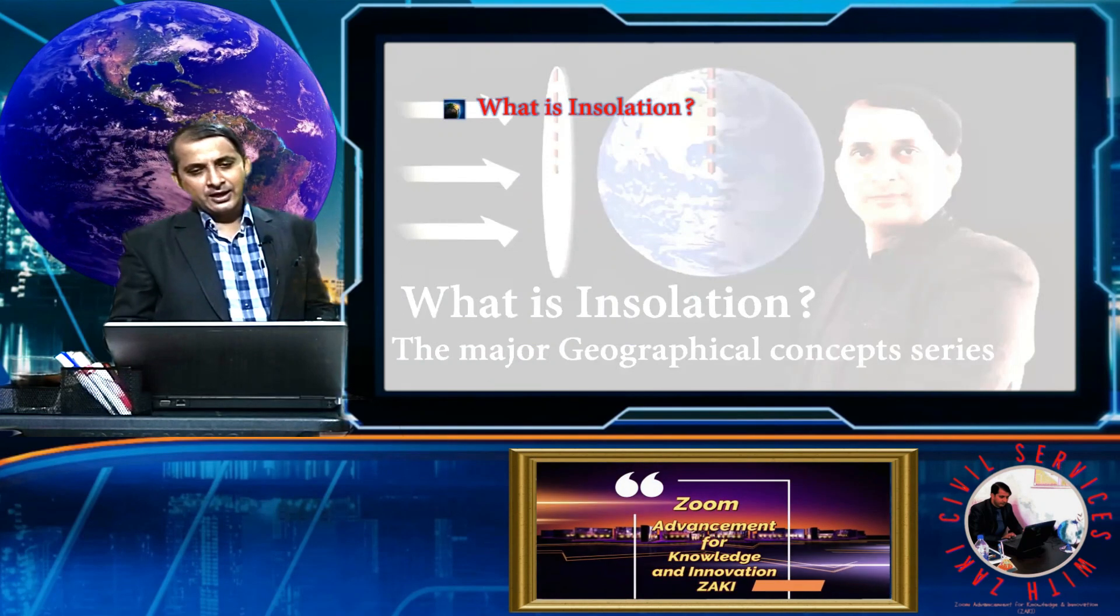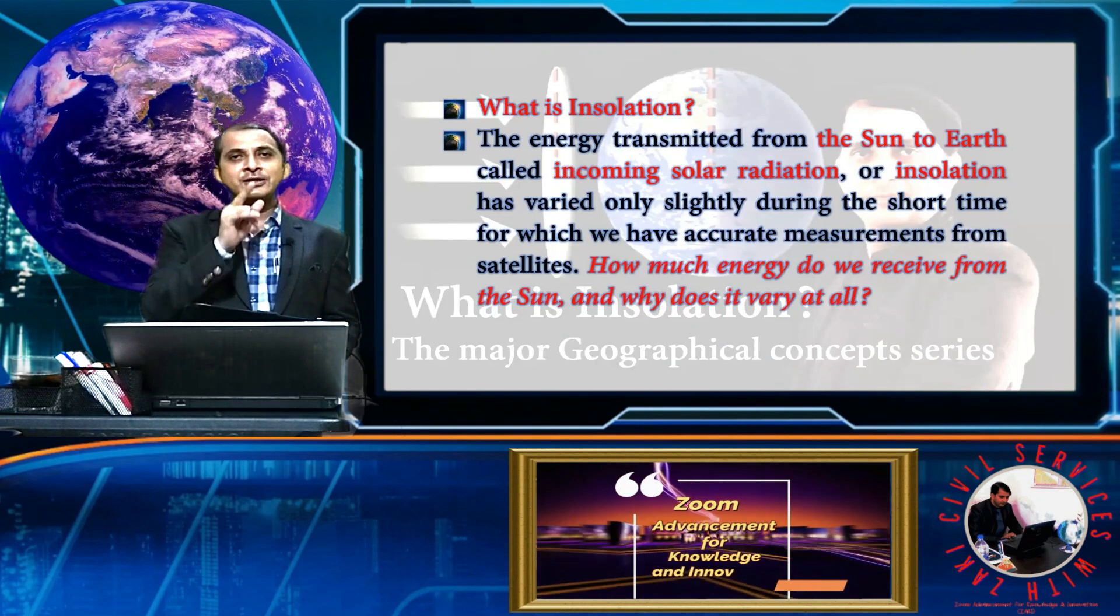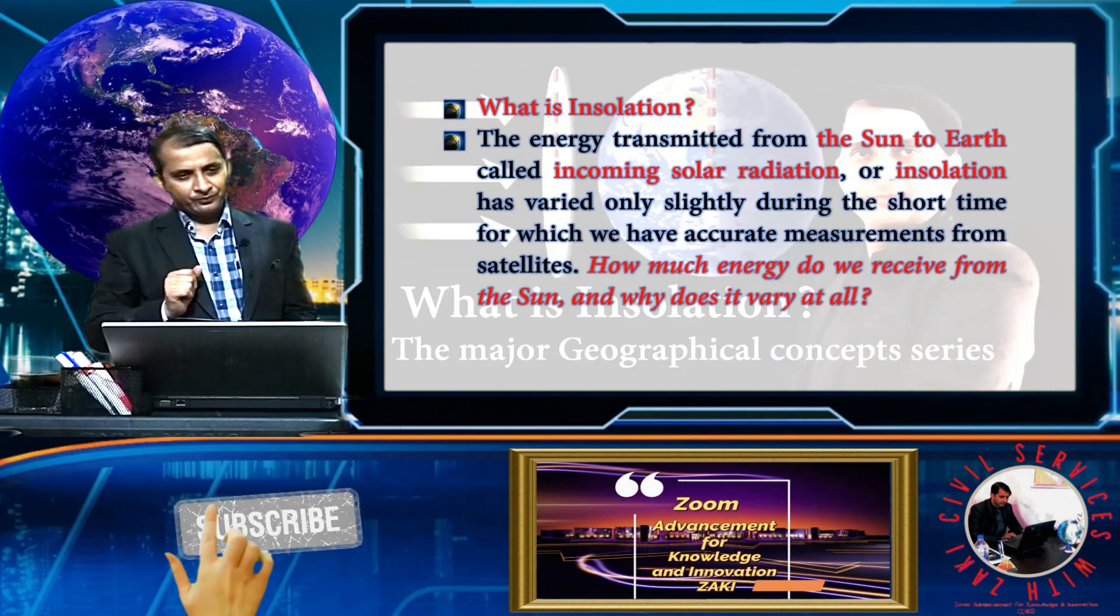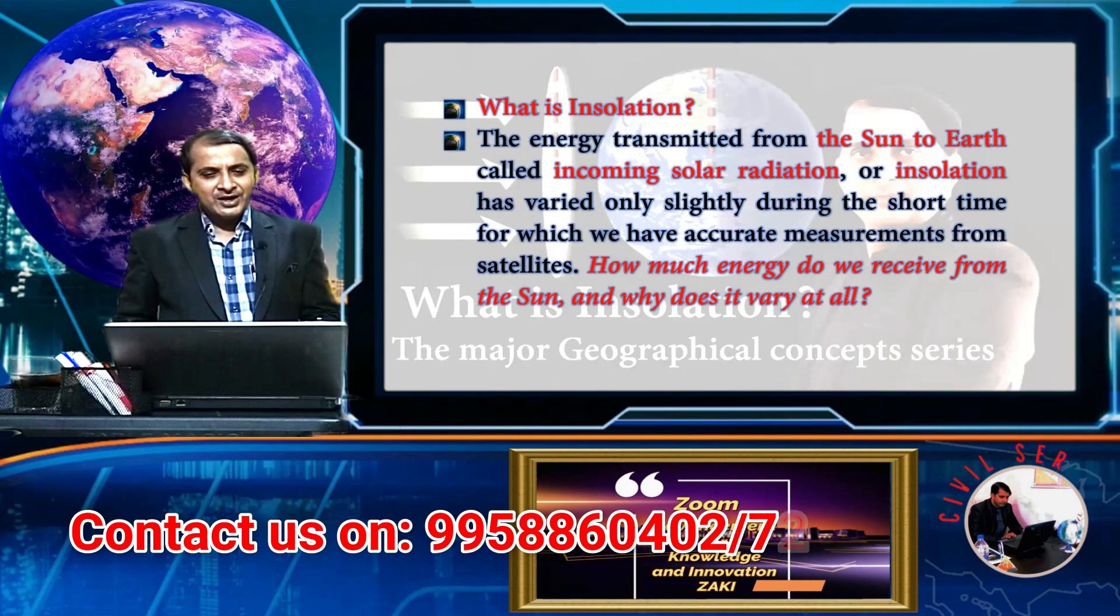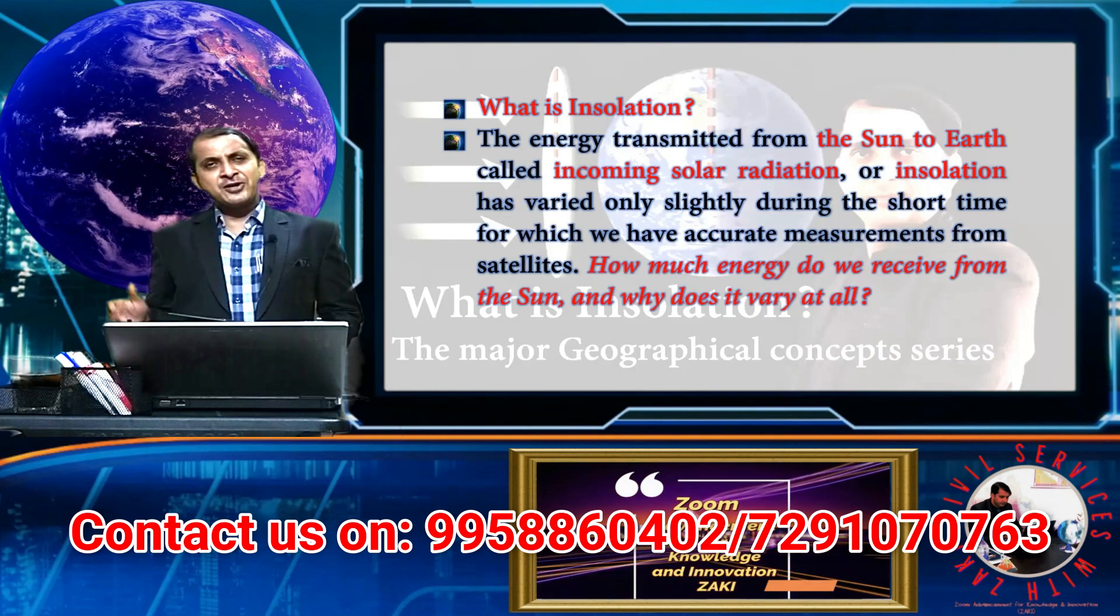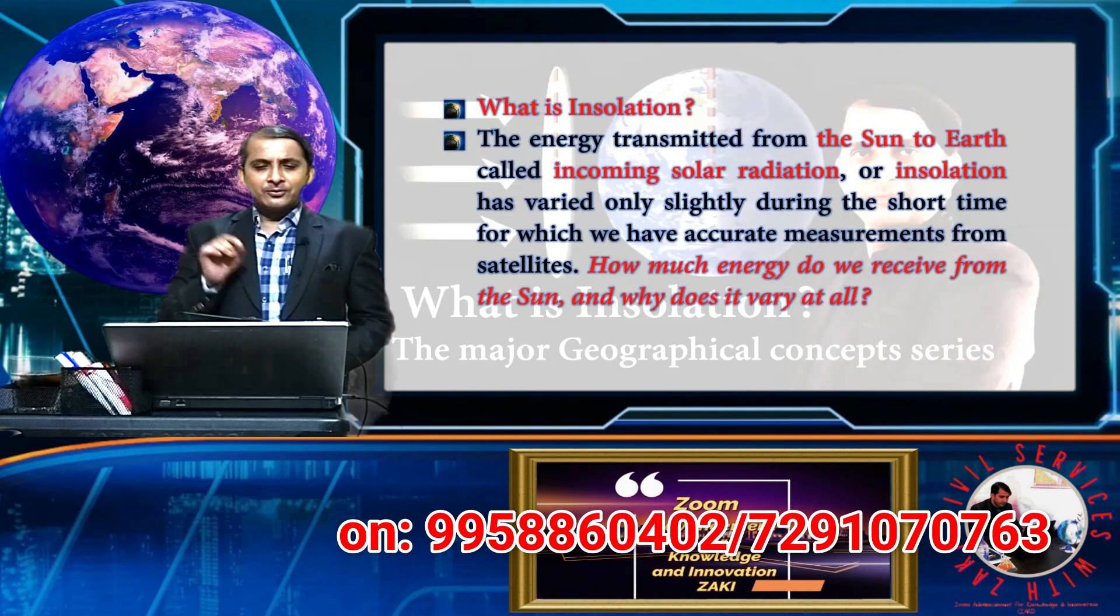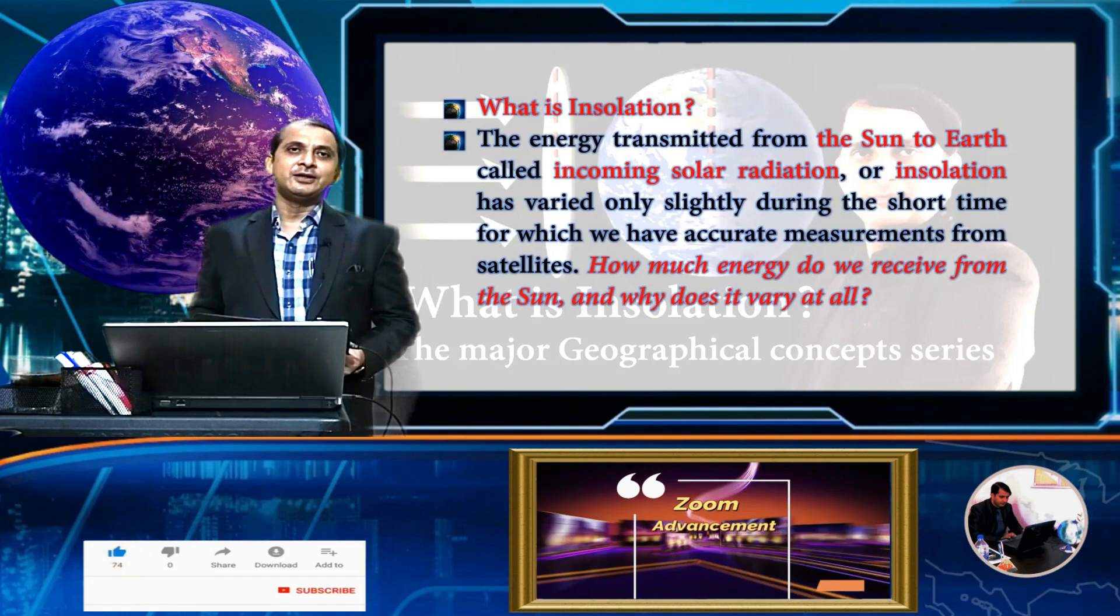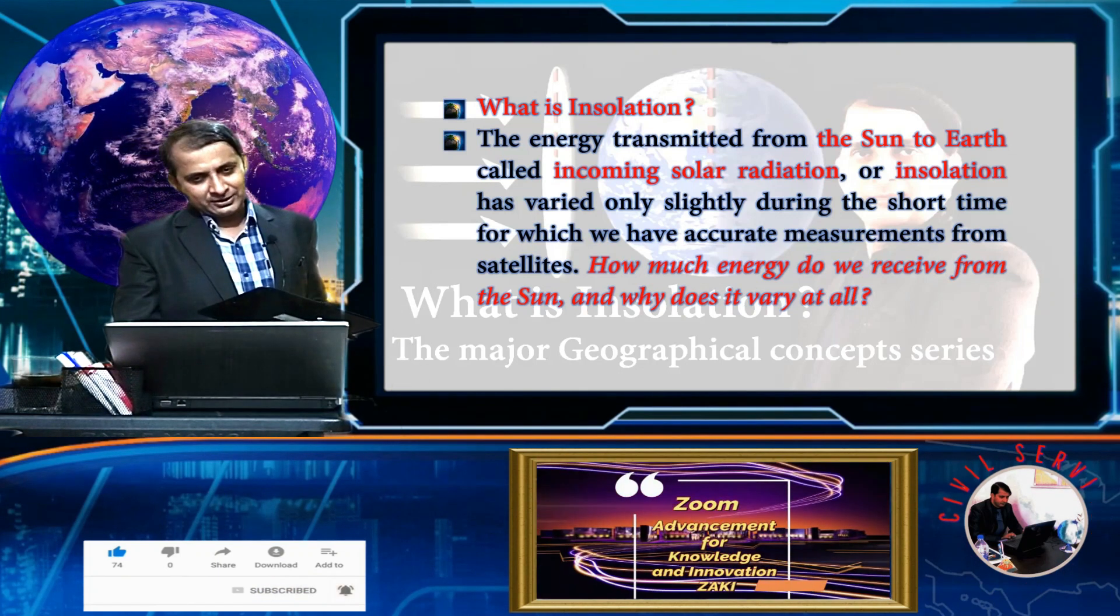What is insolation? The energy transmitted from the Sun to Earth is called incoming solar radiation or insolation. It has varied only slightly during the short time for which we have accurate measurements from satellites. The basic question is: how much energy do we receive from the Sun and why does it vary at all? Why do some parts of Earth receive more energy and some receive less?